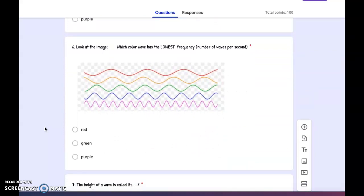Number six: Look at the image. Which color wave has the lowest frequency, which is the number of waves per second? Red, green, or purple?